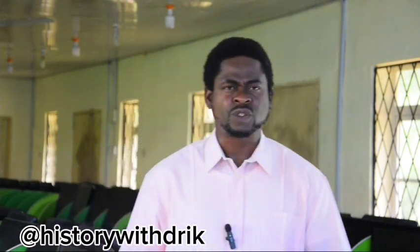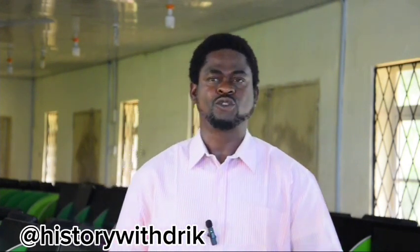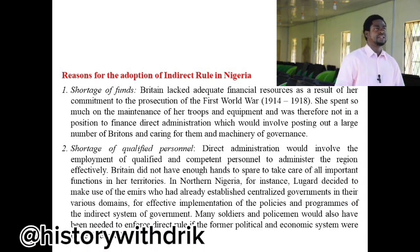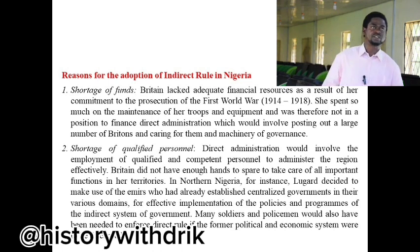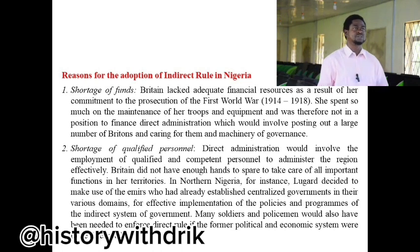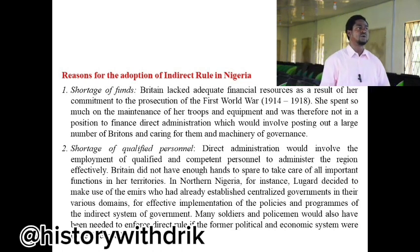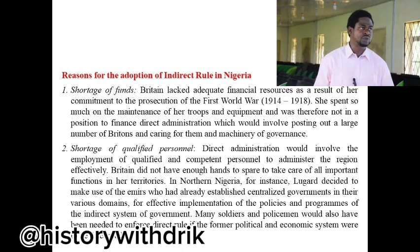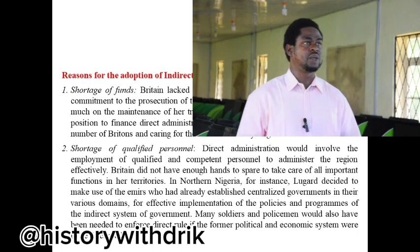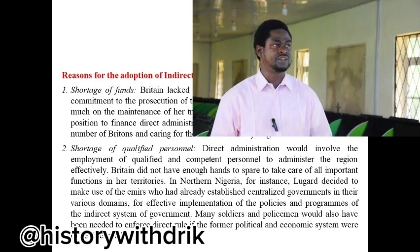Lugard introduced the system of indirect rule in Nigeria because of different reasons. Number one was shortage of funds. Britain lacked adequate financial resources as a result of her commitment to the prosecution of the First World War. She spent so much on the maintenance of her troops and equipment and was therefore not in a position to finance direct administration, which would involve posting a large number of Britons and caring for them and the machinery of governance. Secondly, there was also shortage of qualified personnel.